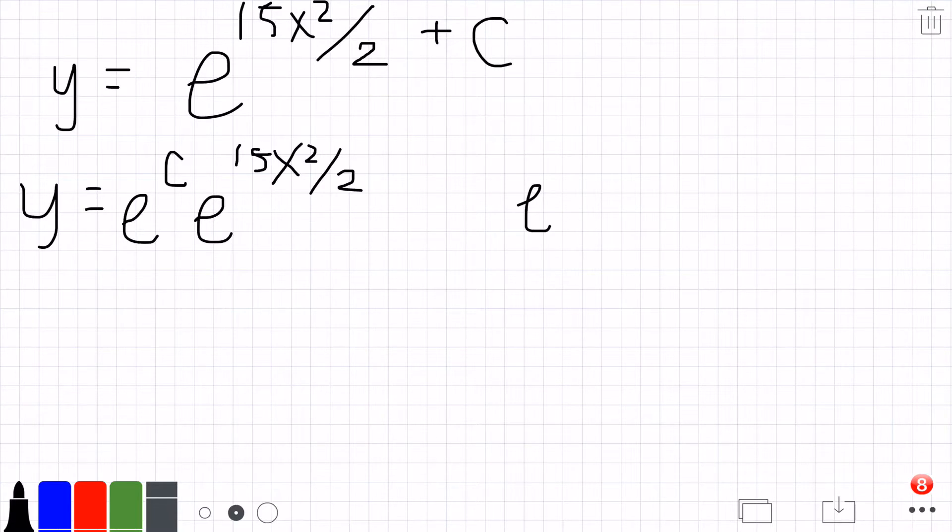Let's call e to the c some other constant A because e to the c is some random number. So y equals A e to the 15x squared over 2.